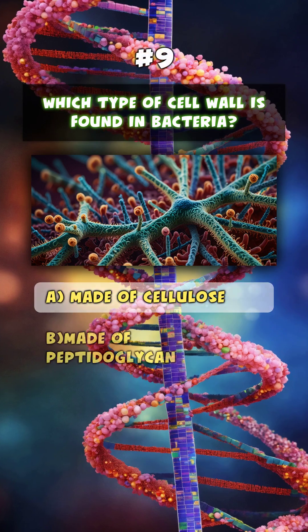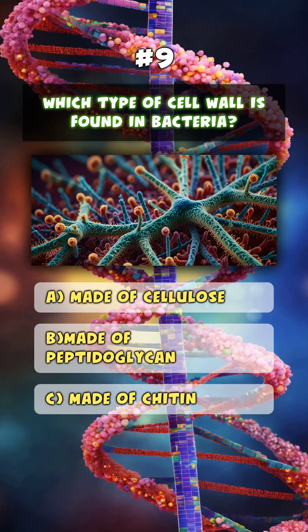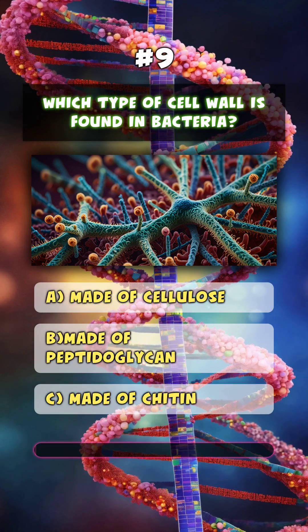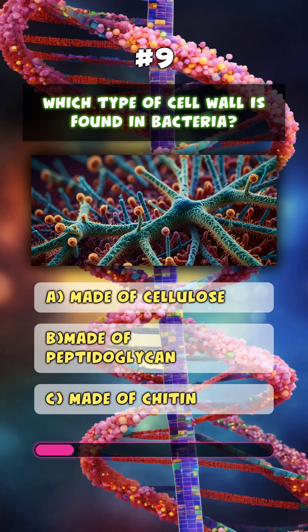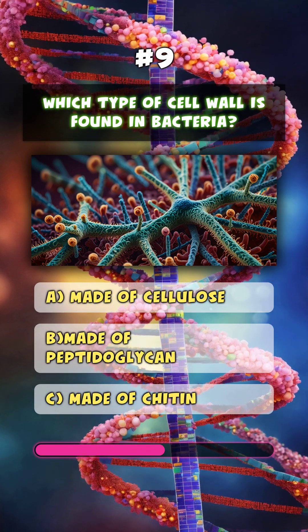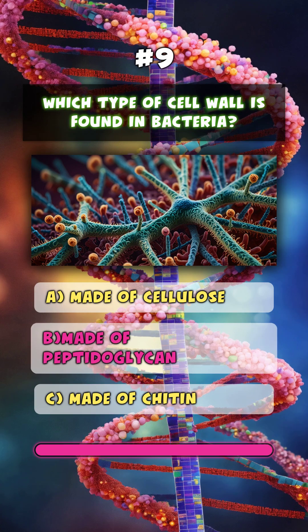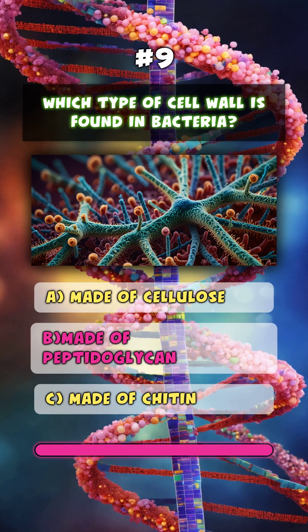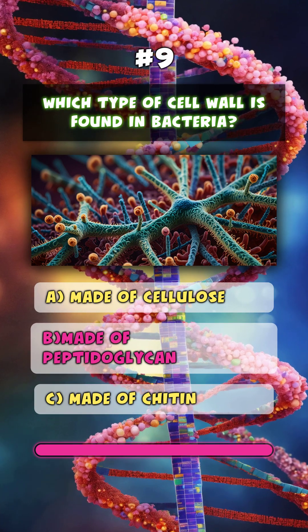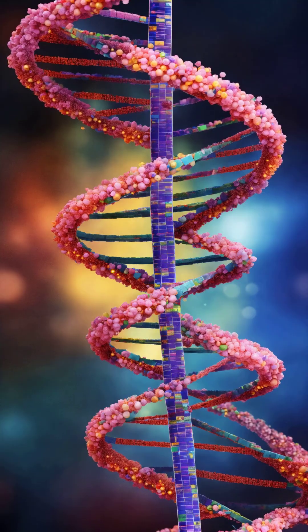Which type of cell wall is found in bacteria? B. Made of peptidoglycan.